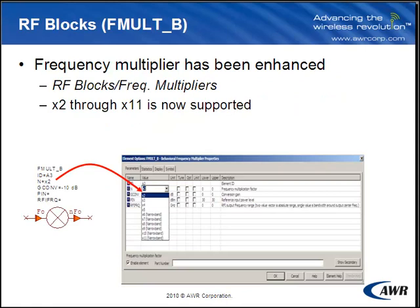The frequency multiplier now supports up to times 11. In previous releases, it supported only up to times 5.